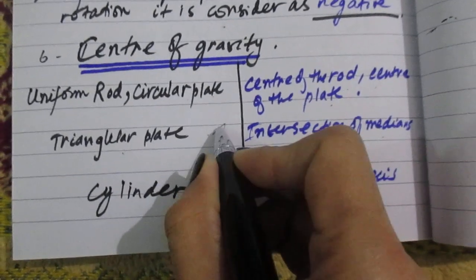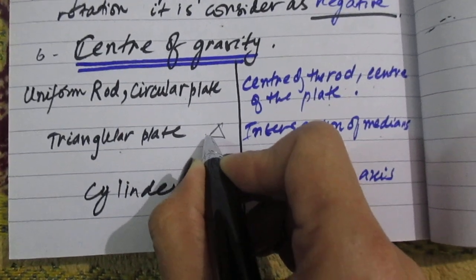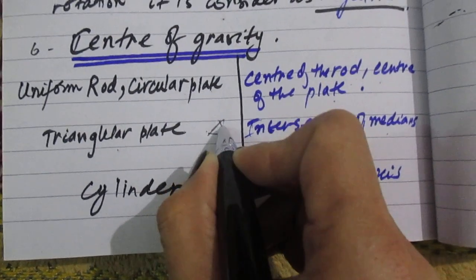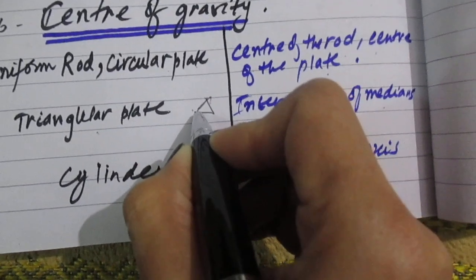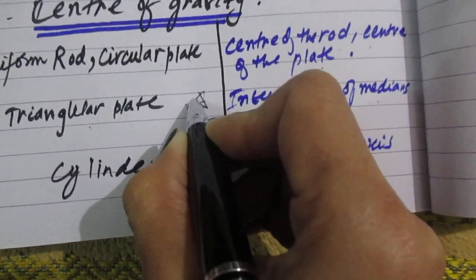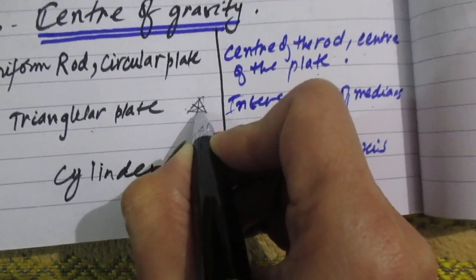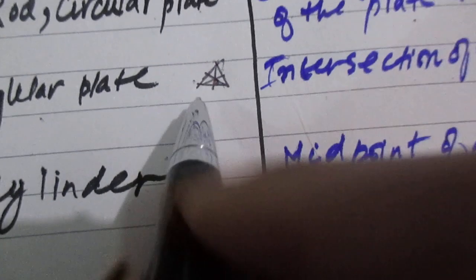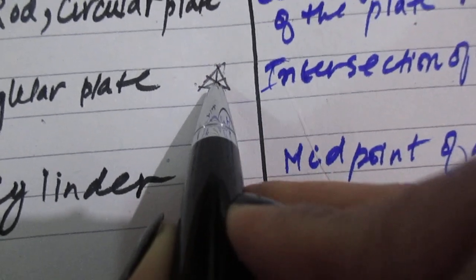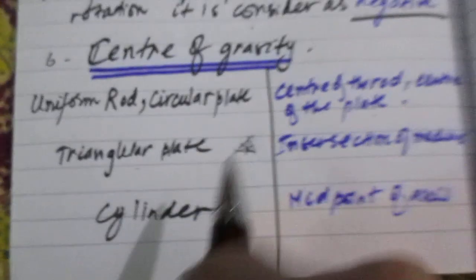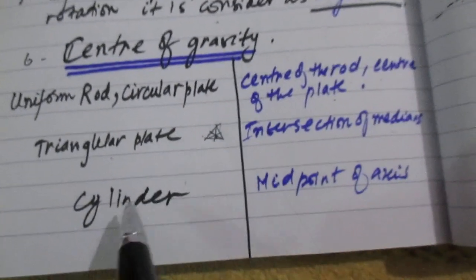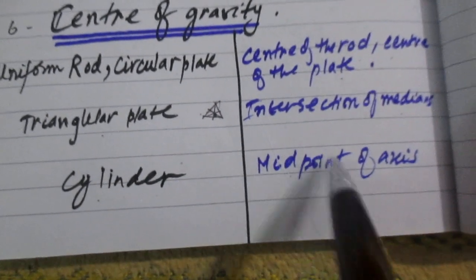Like, this is your triangle. One median is this, one median is this, one median is this. So this is the center point. This is the intersection of the medians. This is the center of gravity. Where is the midpoint of axis?